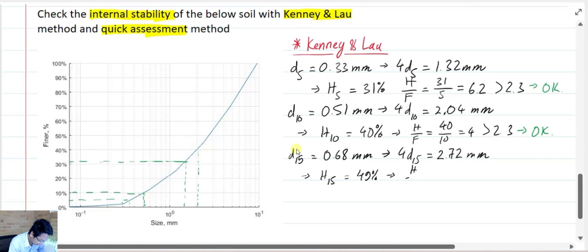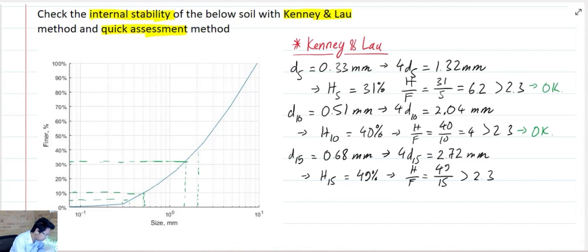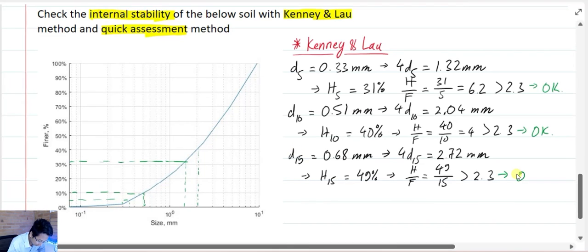So from here, I have my H over F equal to 49 over 15. It is larger than 3. So it's totally larger than 2.3, so it is OK too.